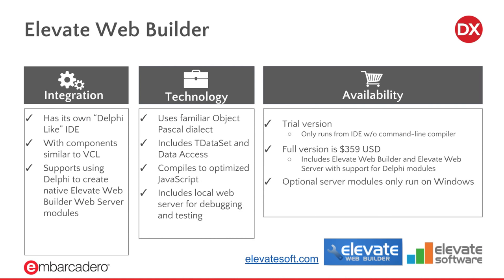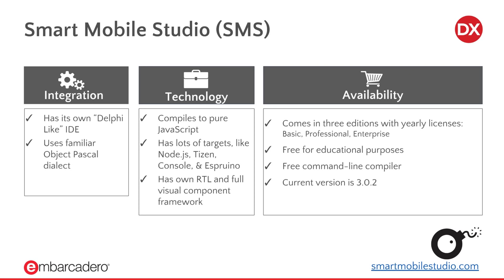The first transpiler we're going to talk about is Elevate Web Builder. It has its own Delphi-like IDE with components similar to the VCL, so you have a design surface where you put down components and then write Object Pascal in a dialect similar to Delphi. It includes TDataset and data access components so you can consume data from a DataSnap server and display it to the user. Additionally they have a web server module that you can write Delphi modules for, running on Windows on the server side, so they kind of have their own full stack.